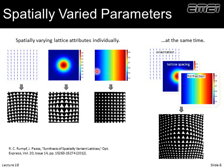Maybe we want to adjust the fill fraction from left to right — go from small triangles to big triangles — while keeping the lattice spacing and orientation the same. That one is done a lot in the literature; the other two are less common, and the orientation one is rarely seen. What's really neat is we can do all three at the same time and independently. The resulting lattice is smooth, continuous, defect-free, and deformations are minimized.